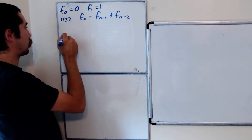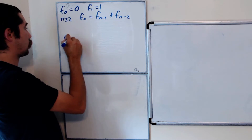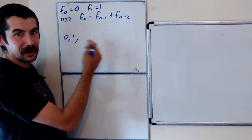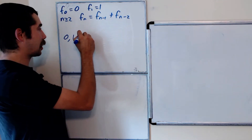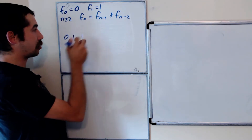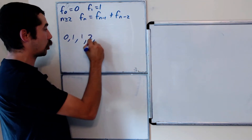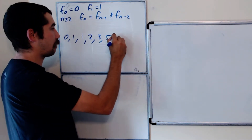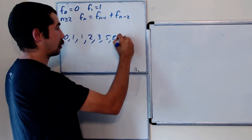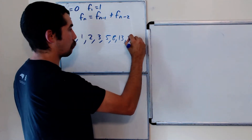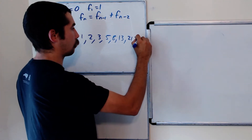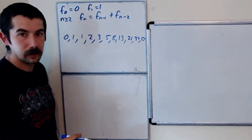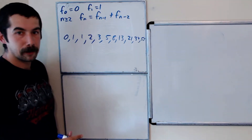Let's write out some of the terms. It's 0, 1, and then you add them together to get 1. You add these two together to get 2, then 3, 5, 8, 13, 21, 34, and let's stop at 55.